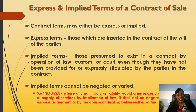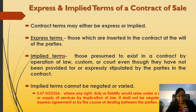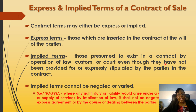The implied terms, on the other hand, are what the law implies to exist between the two parties even if you don't talk about them. These are terms existing in a contract because of the law, custom, or court decisions, and the law will consider them to exist even if you don't state them expressly. These implied terms are strict — you cannot change, vary, or negate them. Section 67 says these things shall exist and you cannot waive them. The express terms are those stated expressly, and both express and implied terms are called conditions in law.